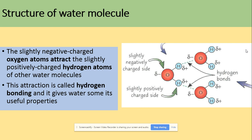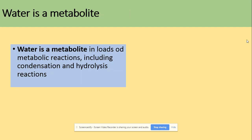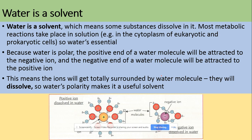The slightly negative oxygen atoms attract the slightly positive hydrogen atoms of neighbouring water molecules. This attraction is called hydrogen bonding and gives water its useful properties. Water is also a metabolite — it is involved in metabolic reactions including condensation and hydrolysis. Water is also a solvent, meaning some substances can dissolve in it, so most metabolic reactions take place in solution — for example in the cytoplasm of eukaryotic and prokaryotic cells.